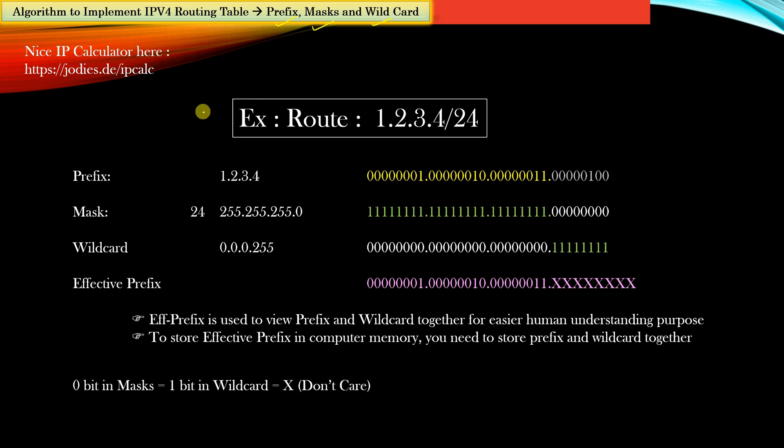Let us say you have an IPv4 route as an example which is 1.2.3.4/24. With this example, the prefix is nothing but the actual IP address itself. So here the prefix is 1.2.3.4 and when this prefix is represented in binary form, you will get 32 bits.